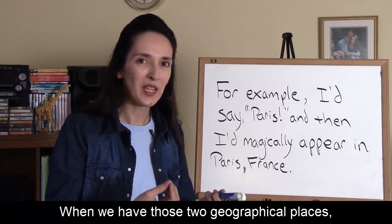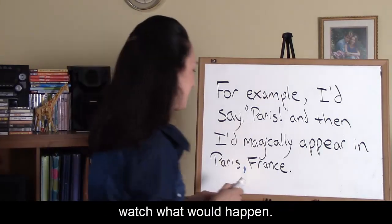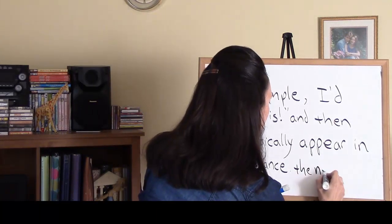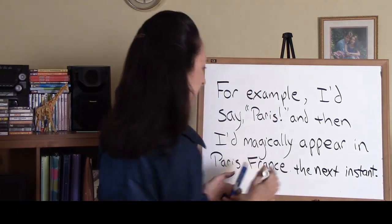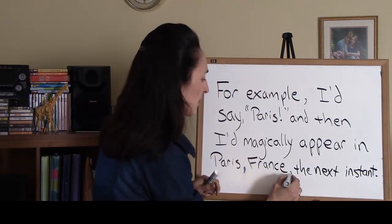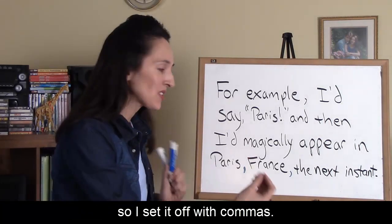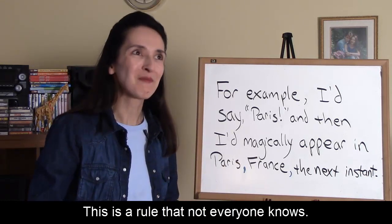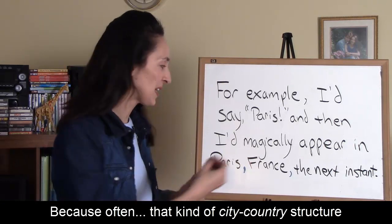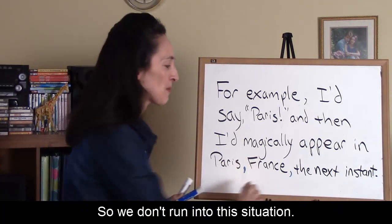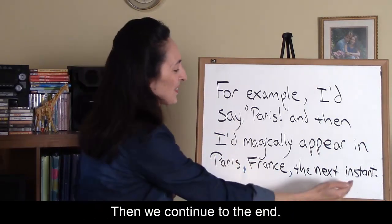When we have two geographical places, we use a comma to separate them. Now if the sentence continued on — 'I'd magically appear in Paris, France, the next instant' — France is treated as secondary information, not as important, so we set it off with commas. This is a rule not everyone knows or remembers. Often 'Paris, France' appears at the end of a sentence, so we don't encounter this situation, but if it appears in the middle of a sentence, we should set off the country with commas and then continue to the end.